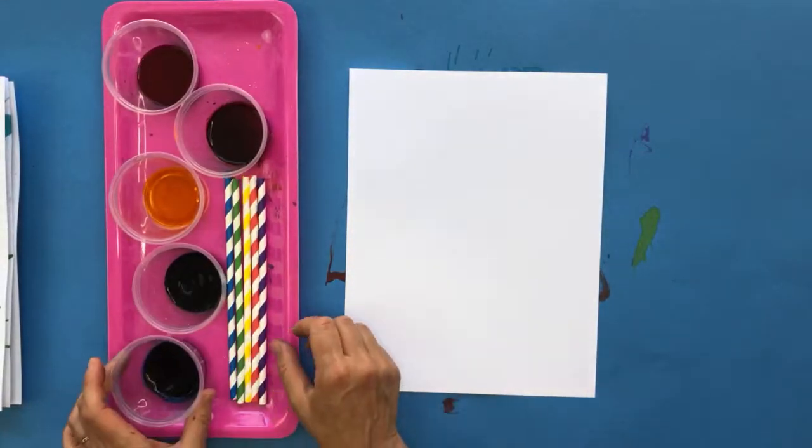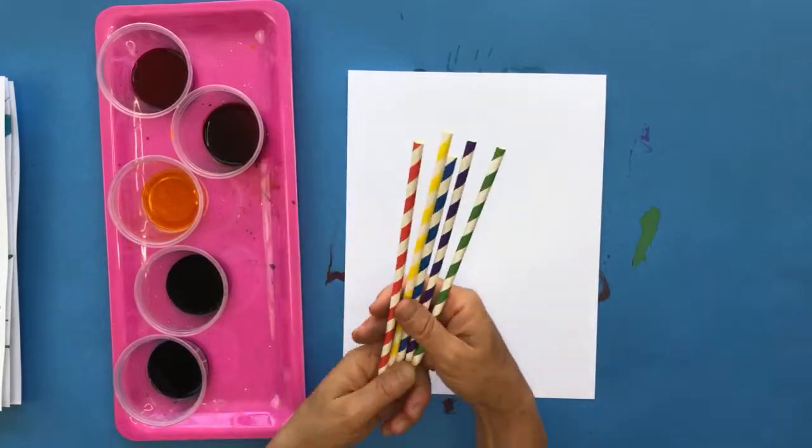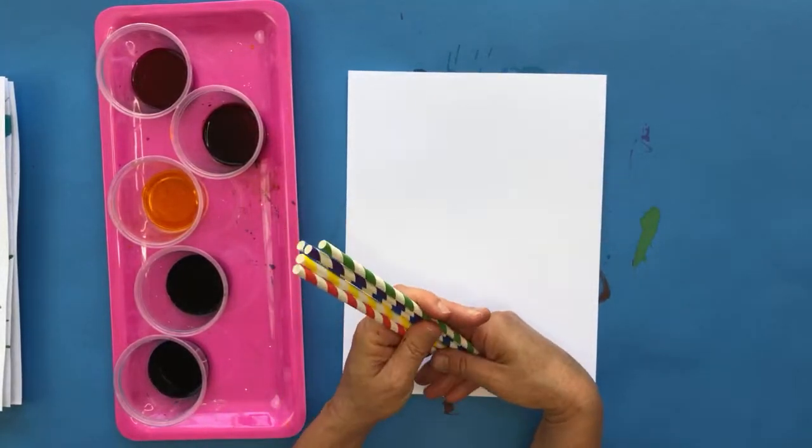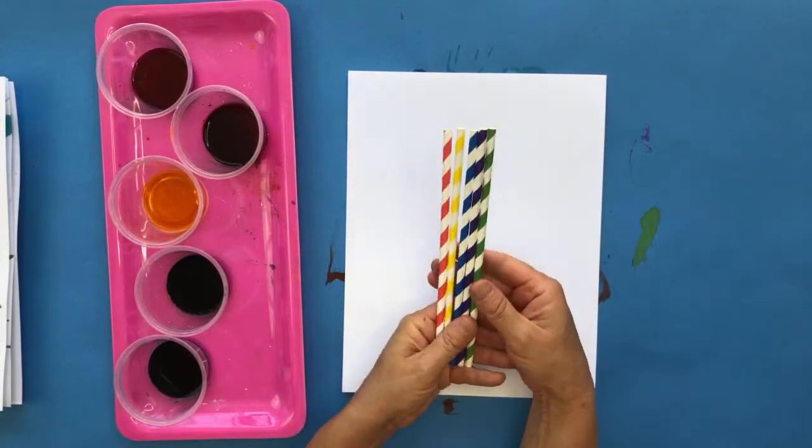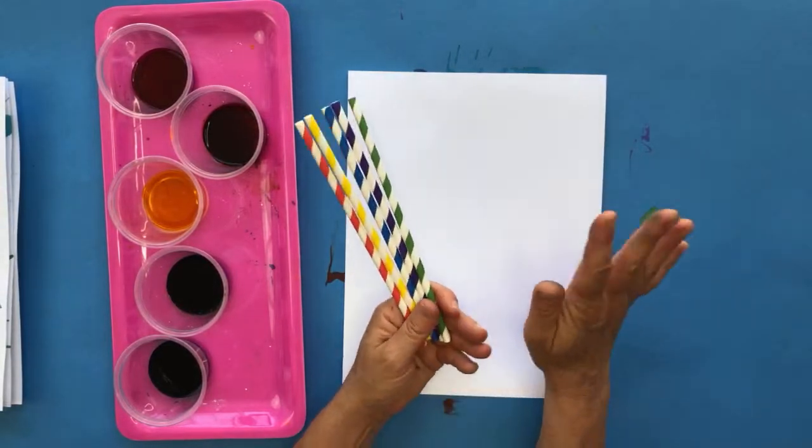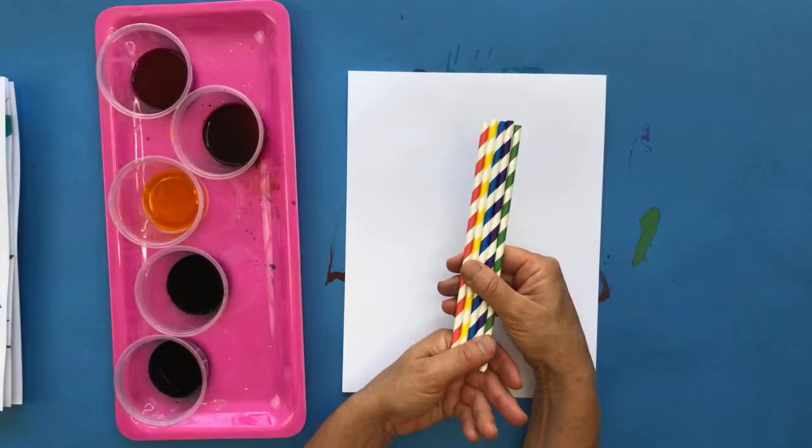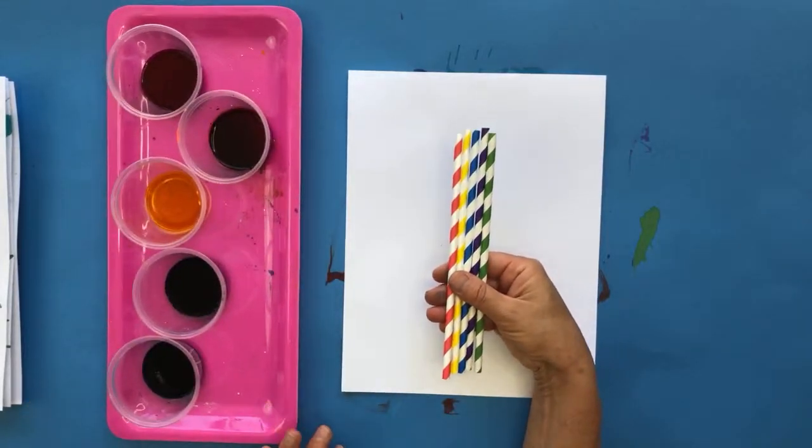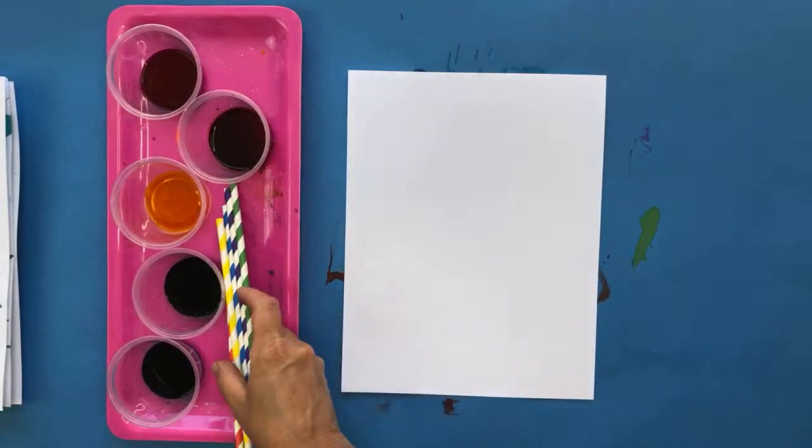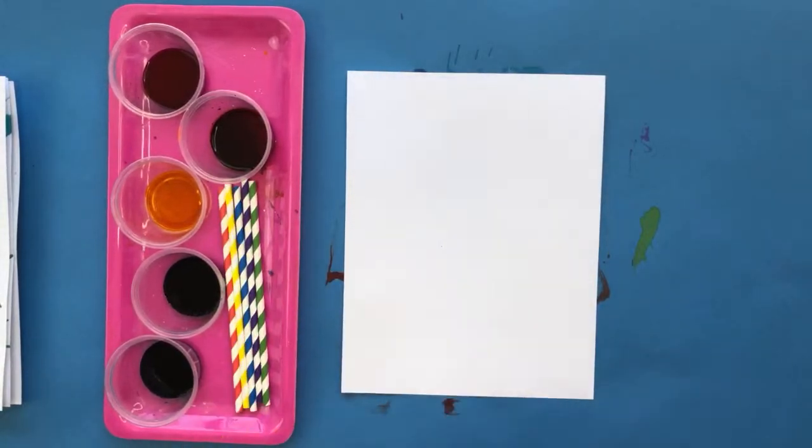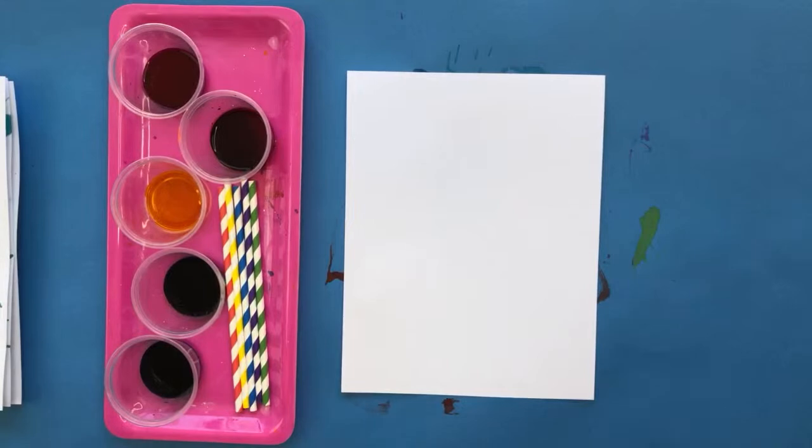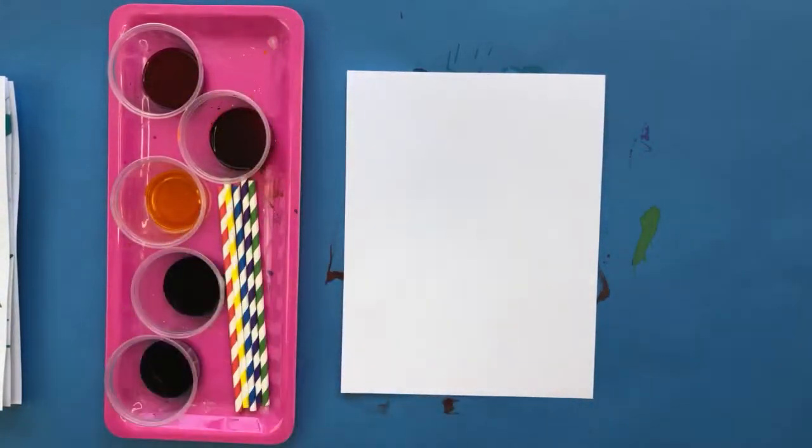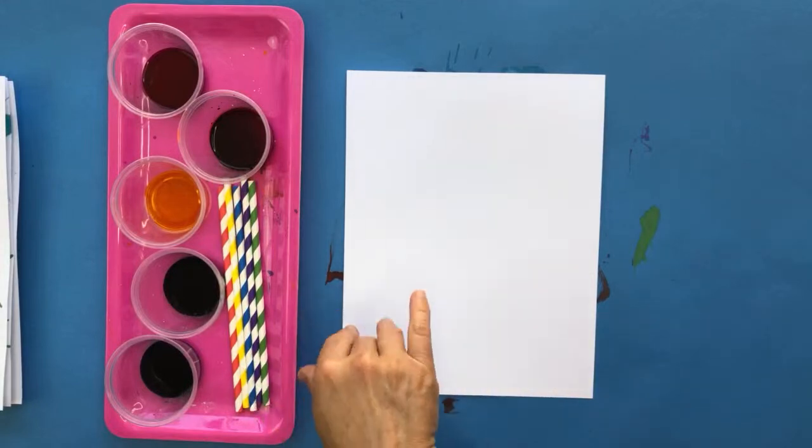And you will also need straws. Okay, you can use paper straws, plastic straws, metal straws. I'm trying to get away from plastic straws, so I have all my paper straws today. And I have one for each of the colors that I'm going to be using to create the artwork. But you don't have to do that. At the minimum though, try if you can to grab a few straws, because you're going to be dipping into the different colors. And so if you have just one straw, you may end up mixing up your colors.